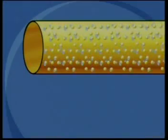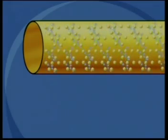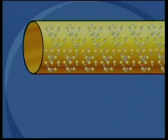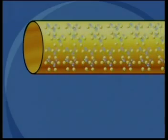So inside copper wire, there's a lattice of cations surrounded by free electrons. The free electrons move randomly from one cation to another throughout the lattice.